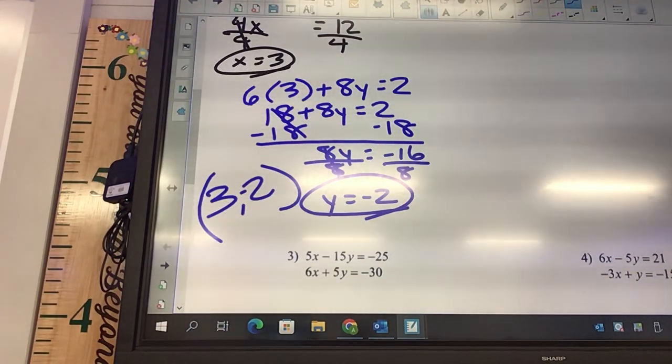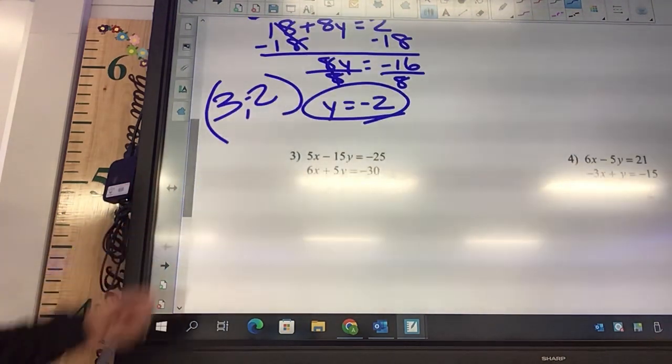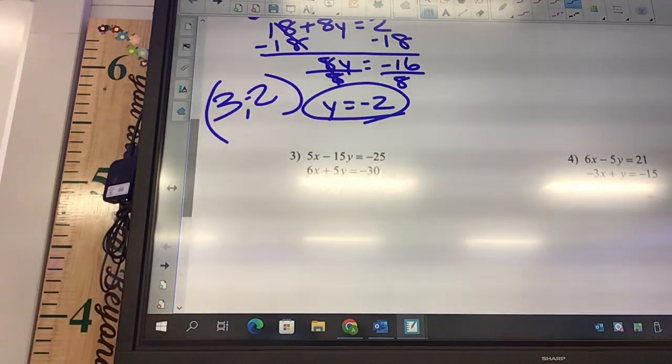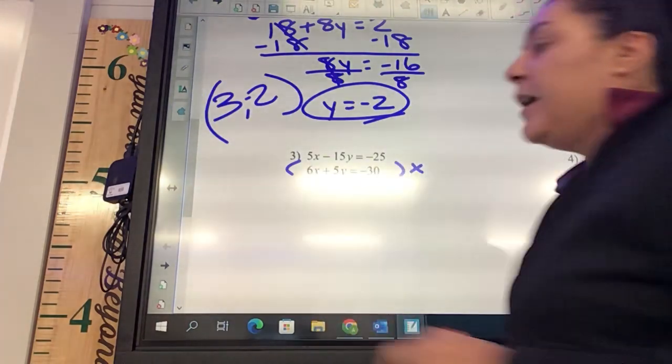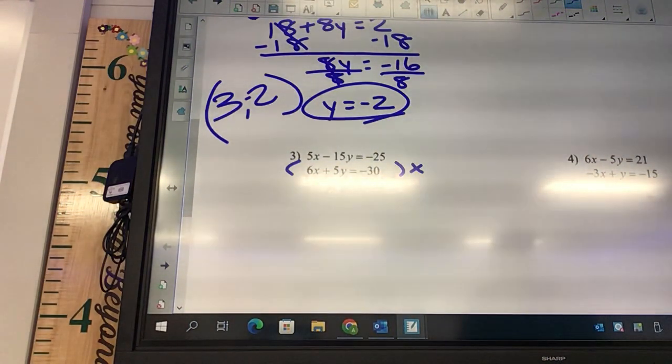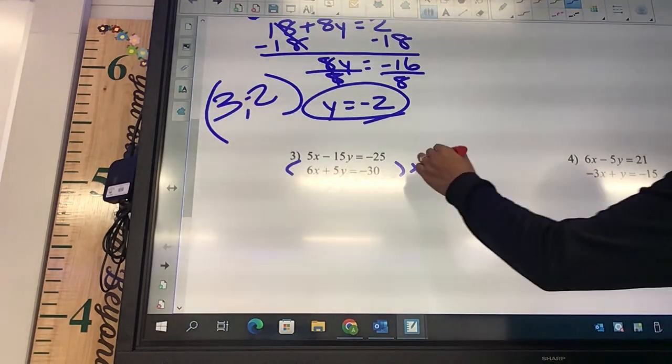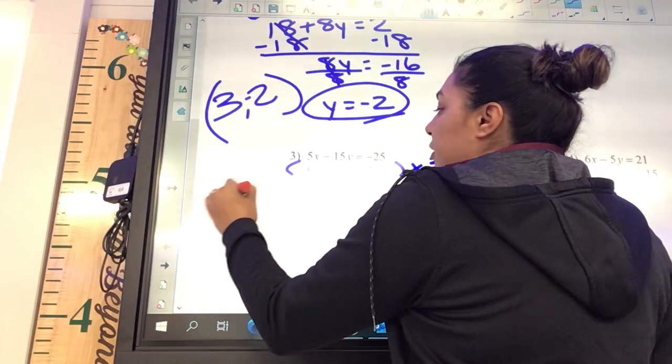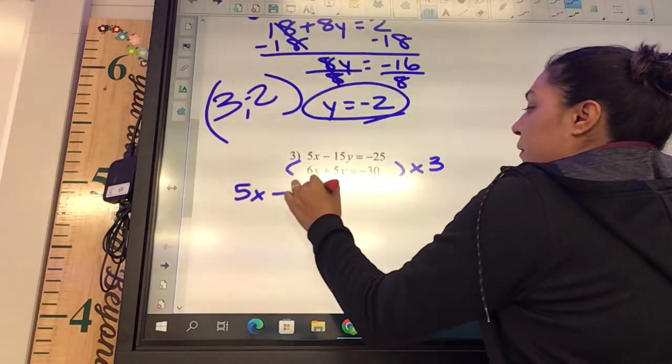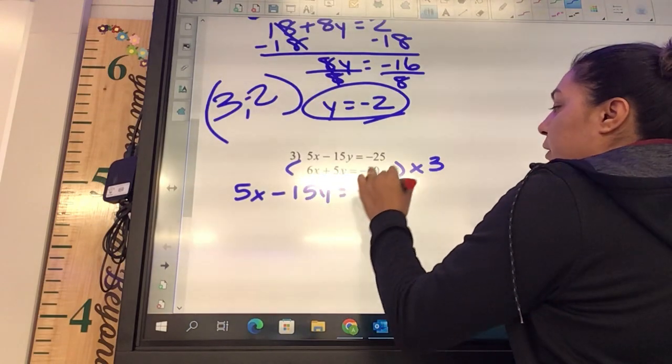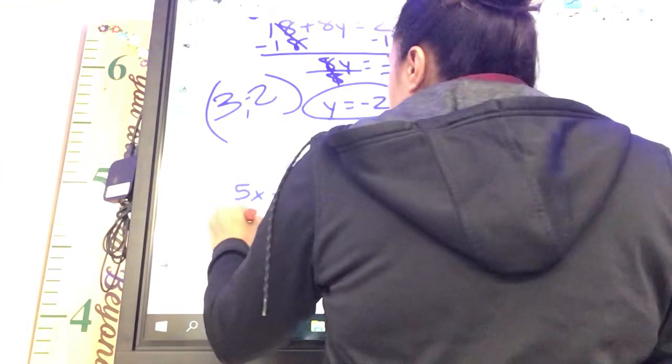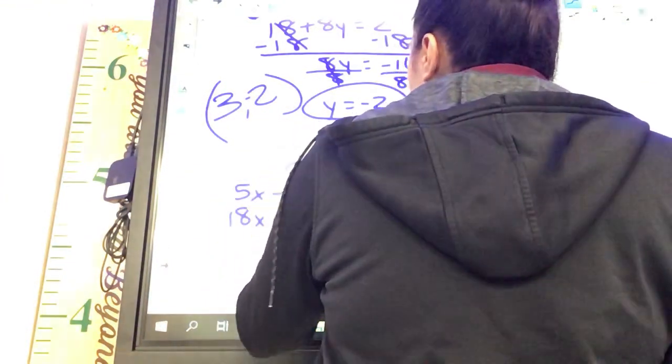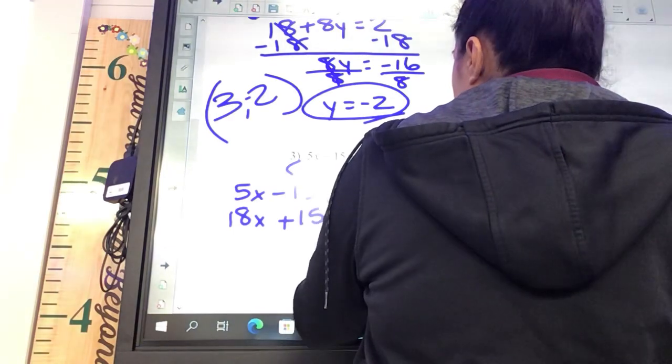Okay, number 3. Do you want to cancel x's or y's? Okay. If you do the y's, which one's smaller? The 5. Okay, so this one is the one we're going to multiply. 5 times what gives me 15? 3. Okay, so top, we're not changing anything. I got 5x minus 15y equals negative 25. Okay, and then on the bottom, I'm going to get 18x plus 15y equals negative 90.